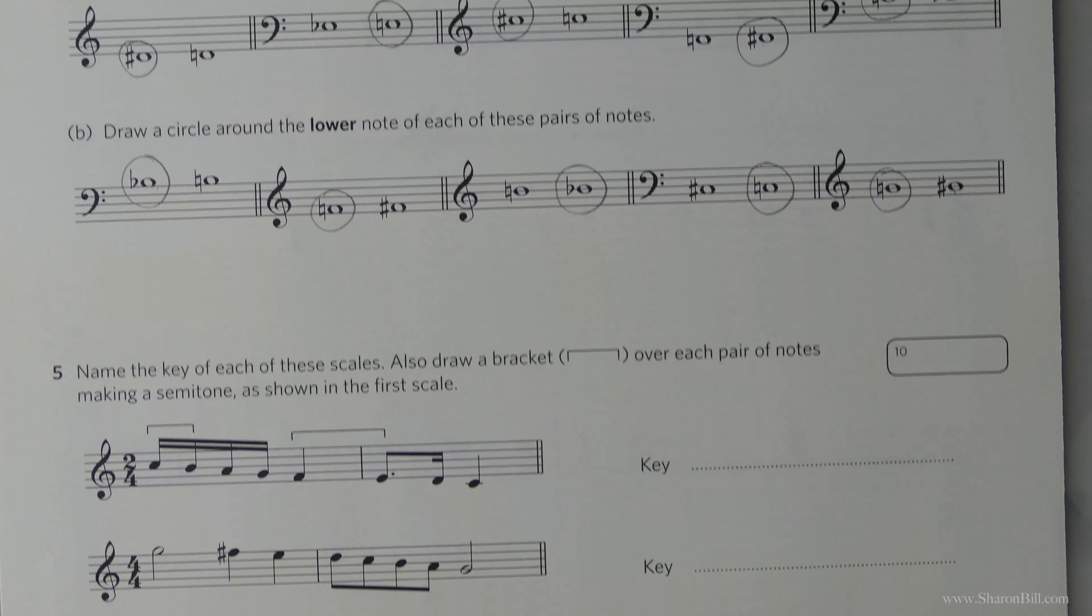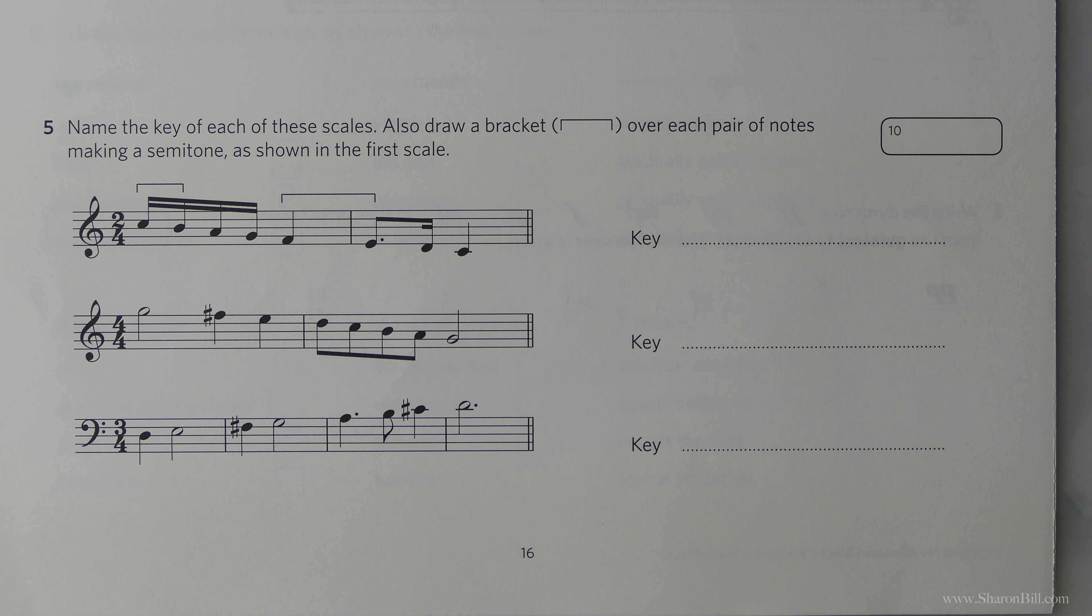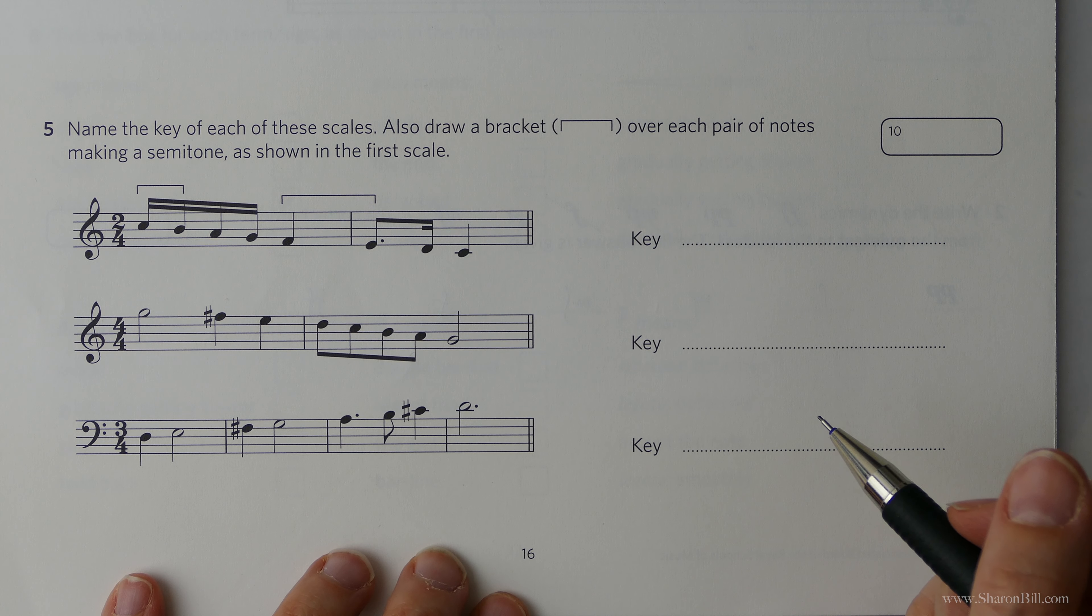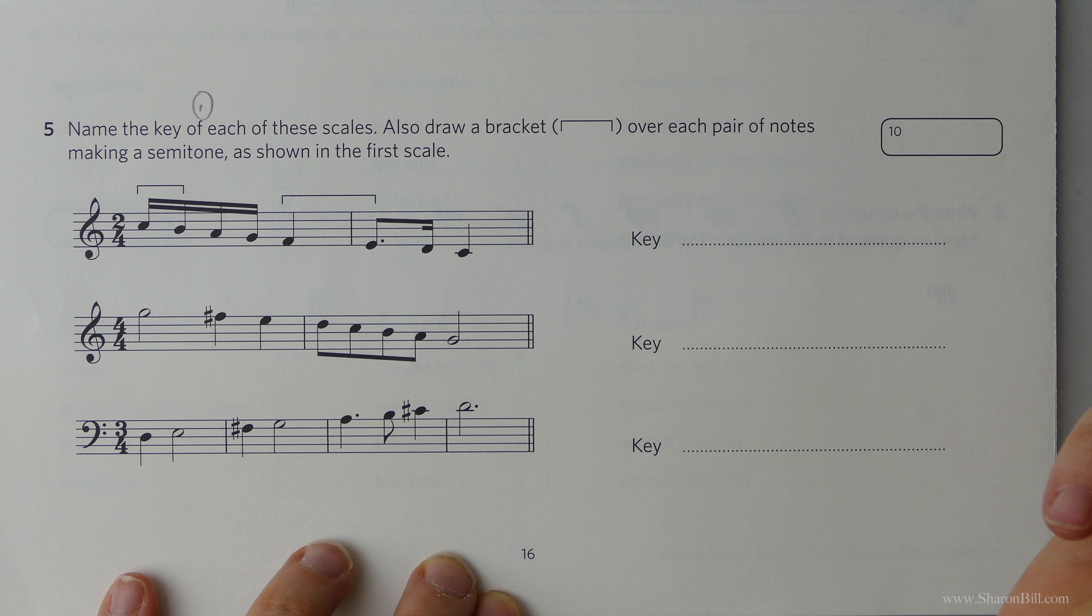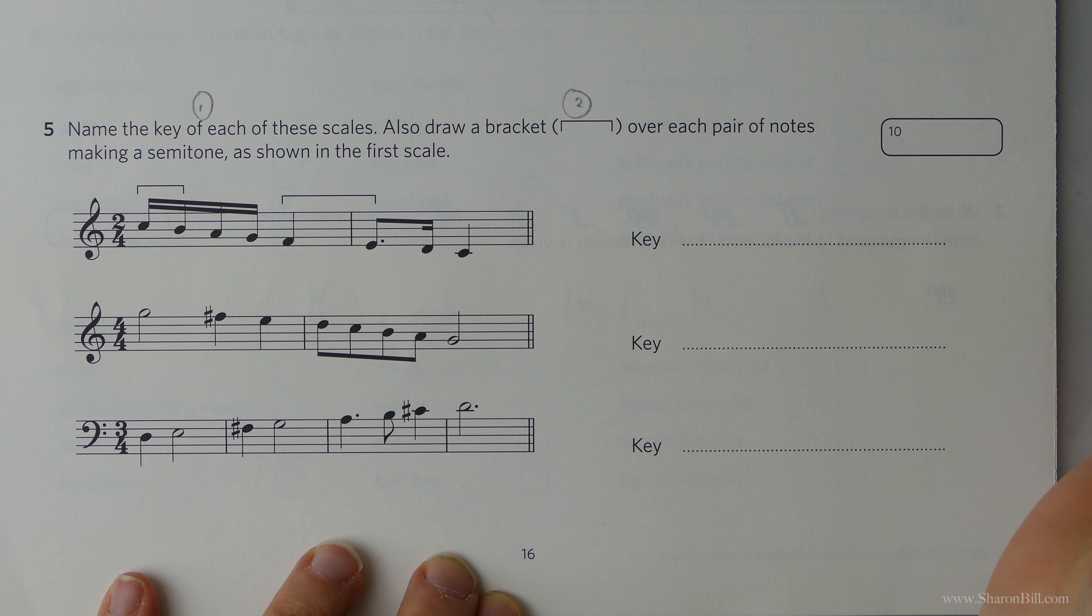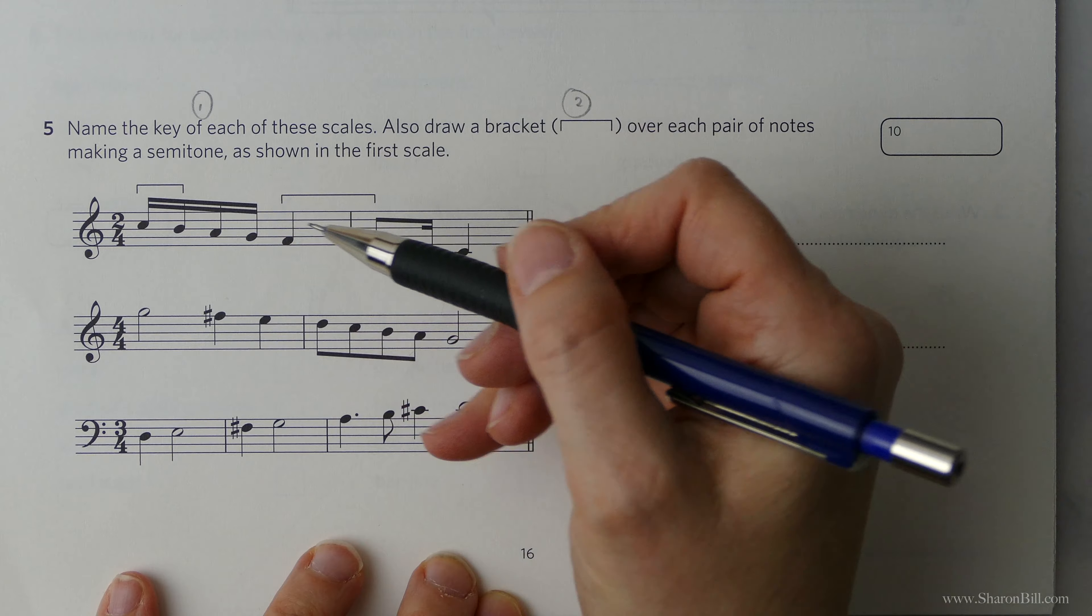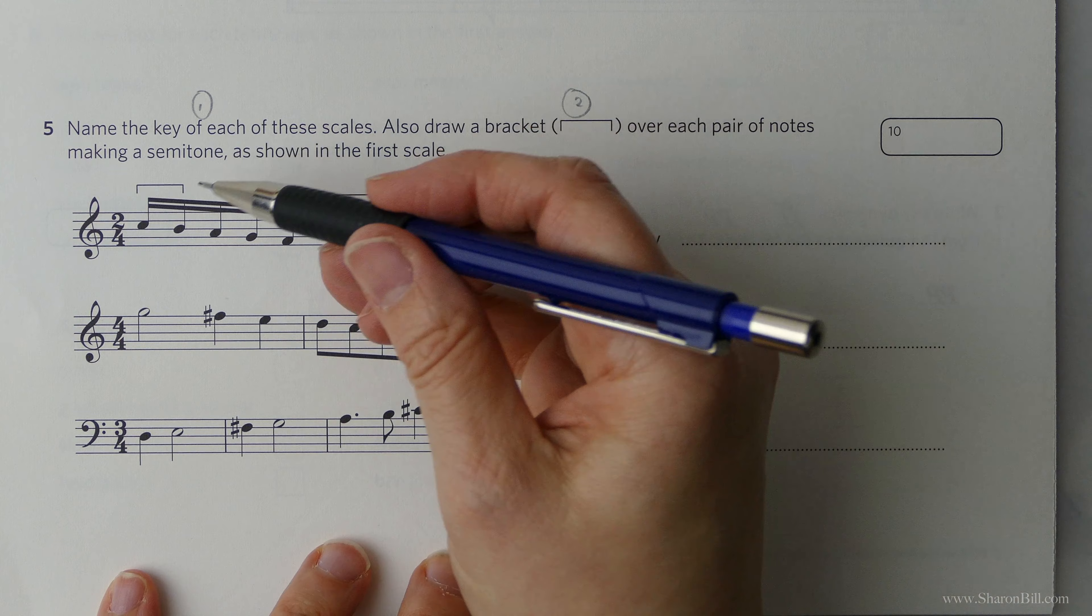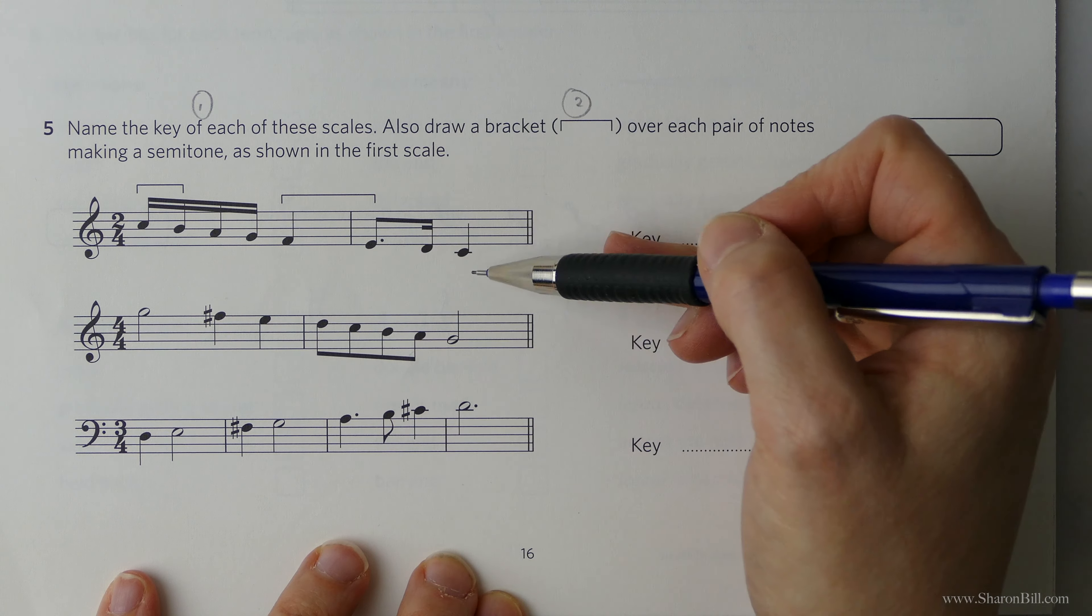Let's move on to the next question. Now we have some scales. So here, you just have to know your key signatures. And you have to know your scale structure. We've got a few things to do here. First of all, we need to name the key of each of these scales. And then we also need to draw the brackets showing where the semitones fall in the scales. They've actually given us the first example of semitones. So they've done the thinking for us actually. So even if you had a bit of a brain freeze, you can work it out from here.